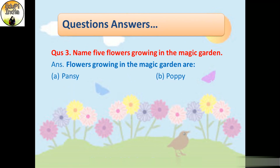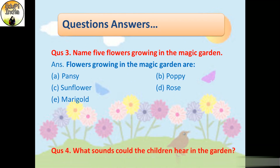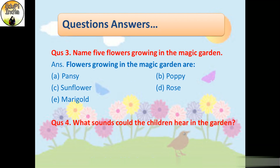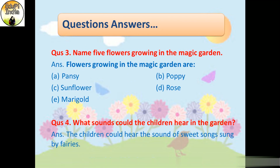Pansy, poppy, sunflower, rose and marigold. Question number four: what sounds could the child hear in the garden? The children could hear the sound of sweet songs sung by fairies.